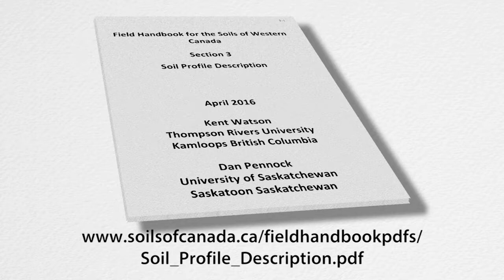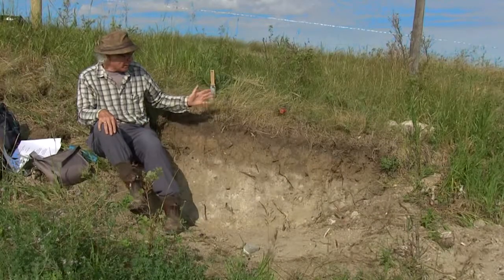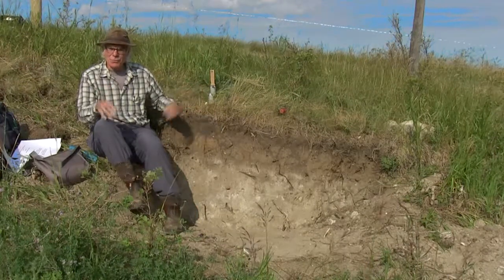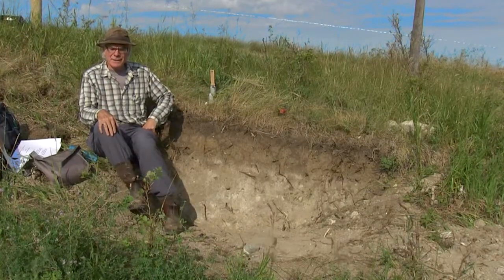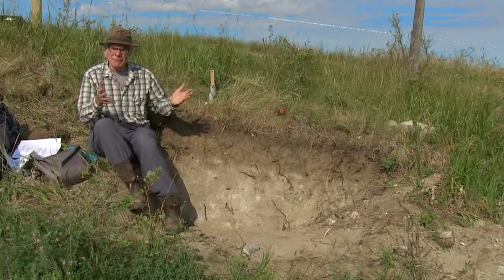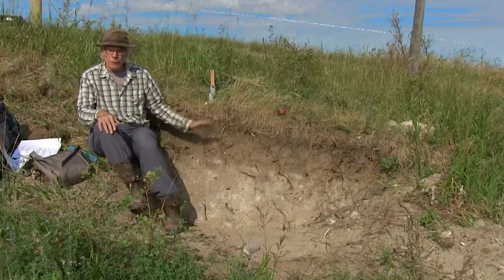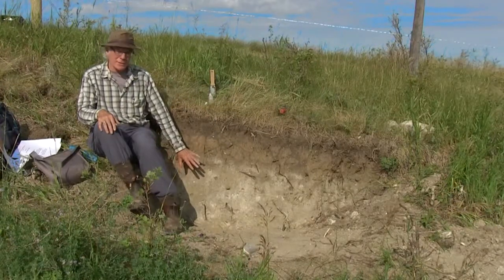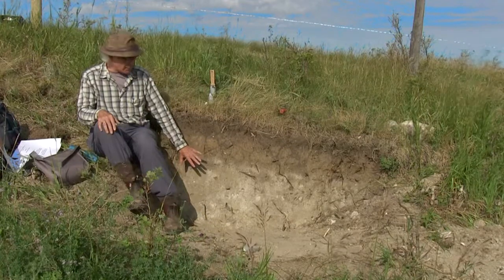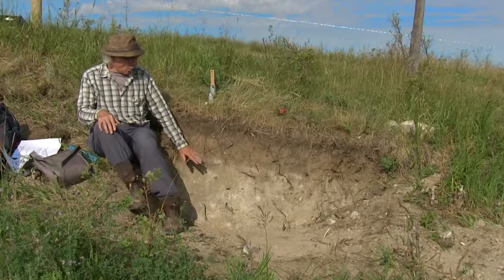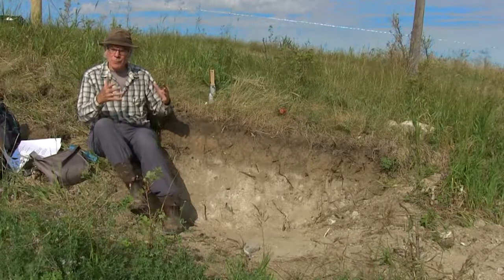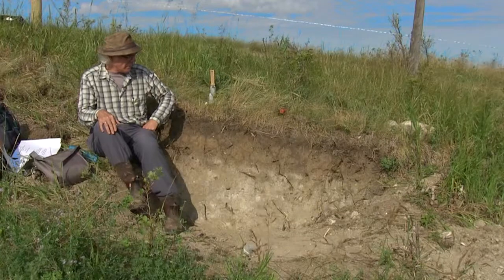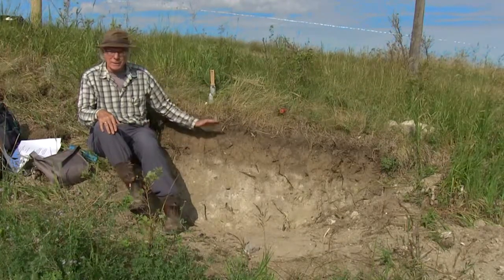The profile we have in front of us — we begin by breaking it into different layers or horizons. The way to think about these horizons is that 10,000 years ago, when the great ice sheets had just left this area, the whole profile would have been composed of the same material — basically the material we can see at the bottom of this profile. Over the 10,000 years since then, soil forming processes have affected that original parent material, creating the different layers we see before us.